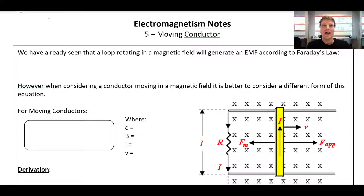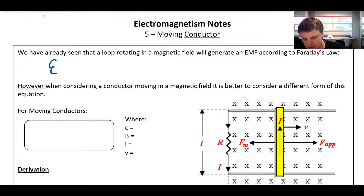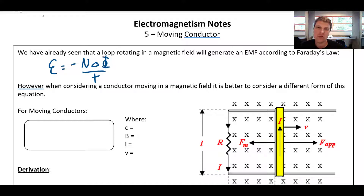Welcome back — this is the fifth lesson on electromagnetism. Today we're looking at what happens to conductors moving in magnetic fields. In the last video we saw that when we have changing magnetic fields, or a change in flux around a coil of wire, that induces a voltage or EMF in that coil. That's how we generate power in generators. The amount of EMF generated is equal to negative N delta phi over t.